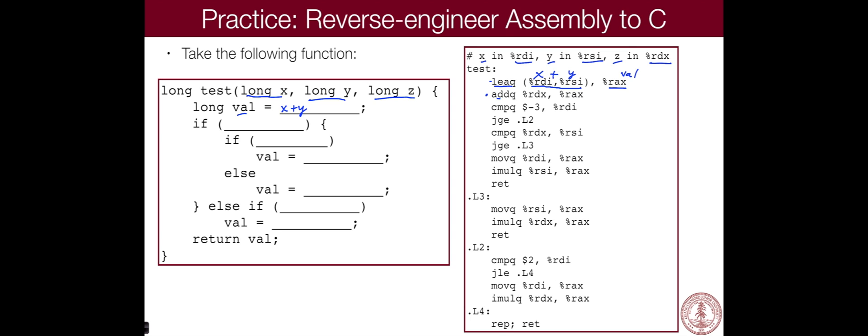Well, this is where the puzzle part comes in. We already know that RAX is our val, because that's what we've done over here. And it's adding RDX, which is Z.